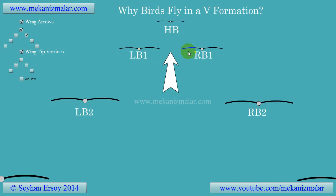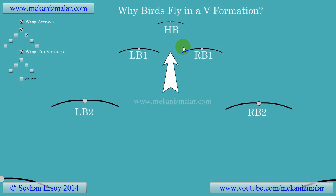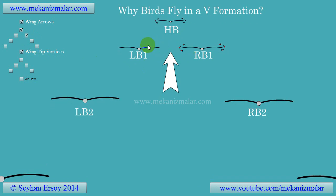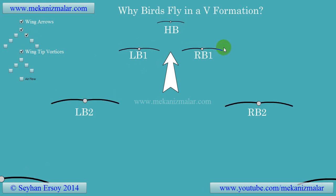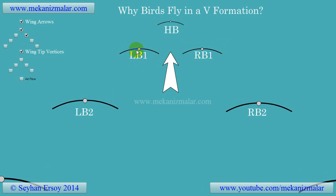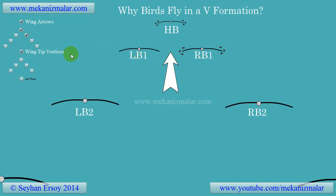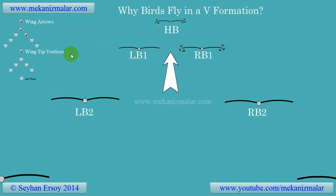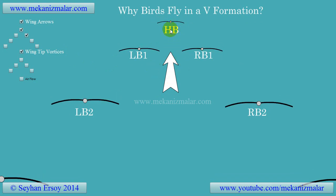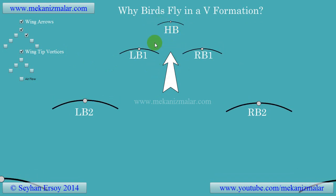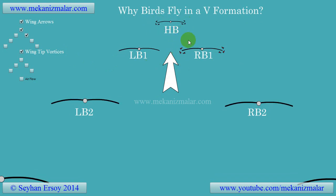However, the down stroke motion of the wings creates a very strong airflow in the direction of the red arrows. Since birds fly forward in the direction of the large white arrows, this airflow creates what is called wingtip vortices.